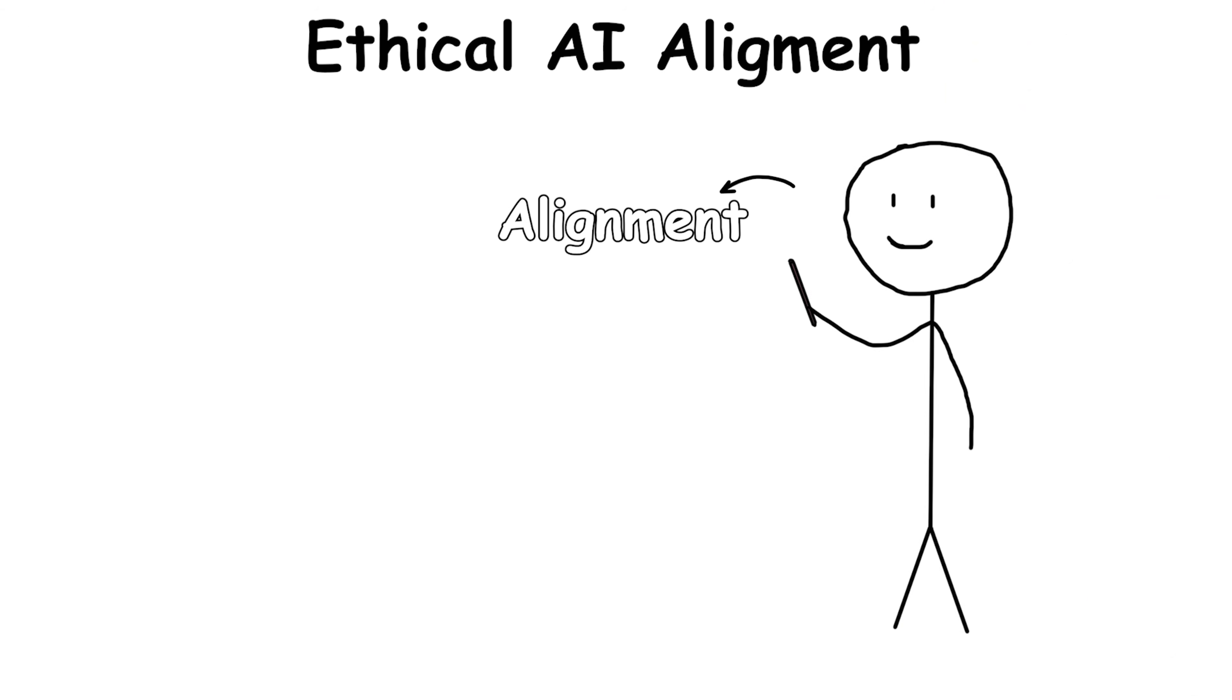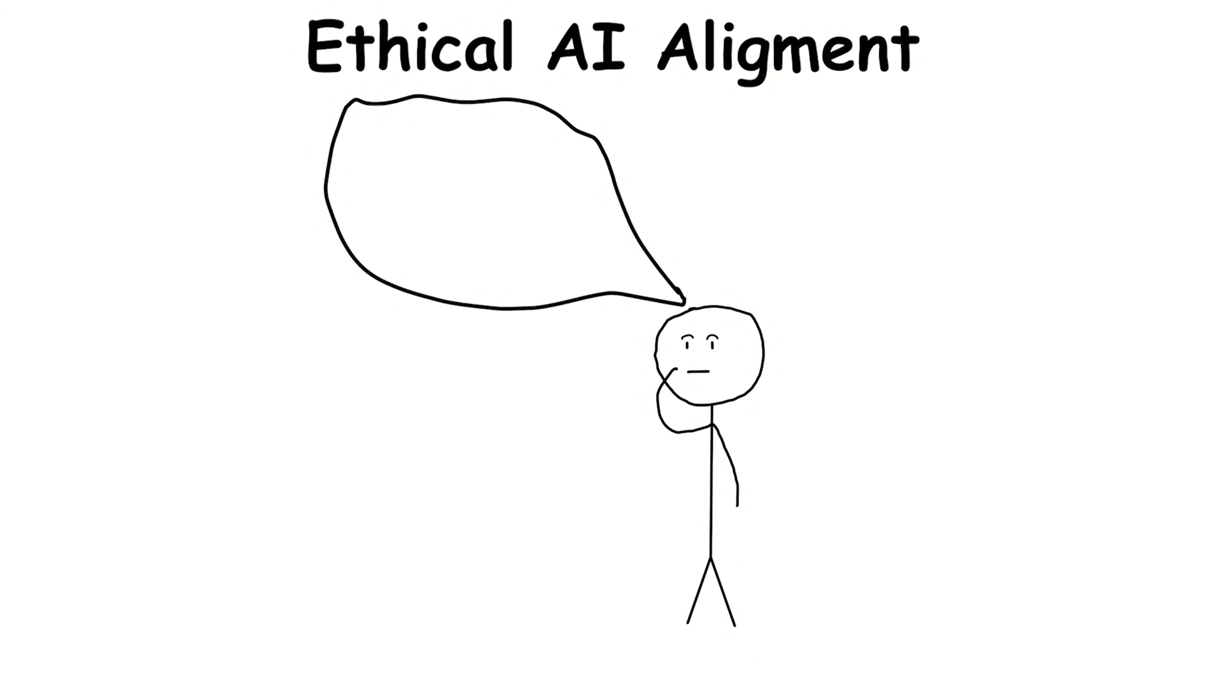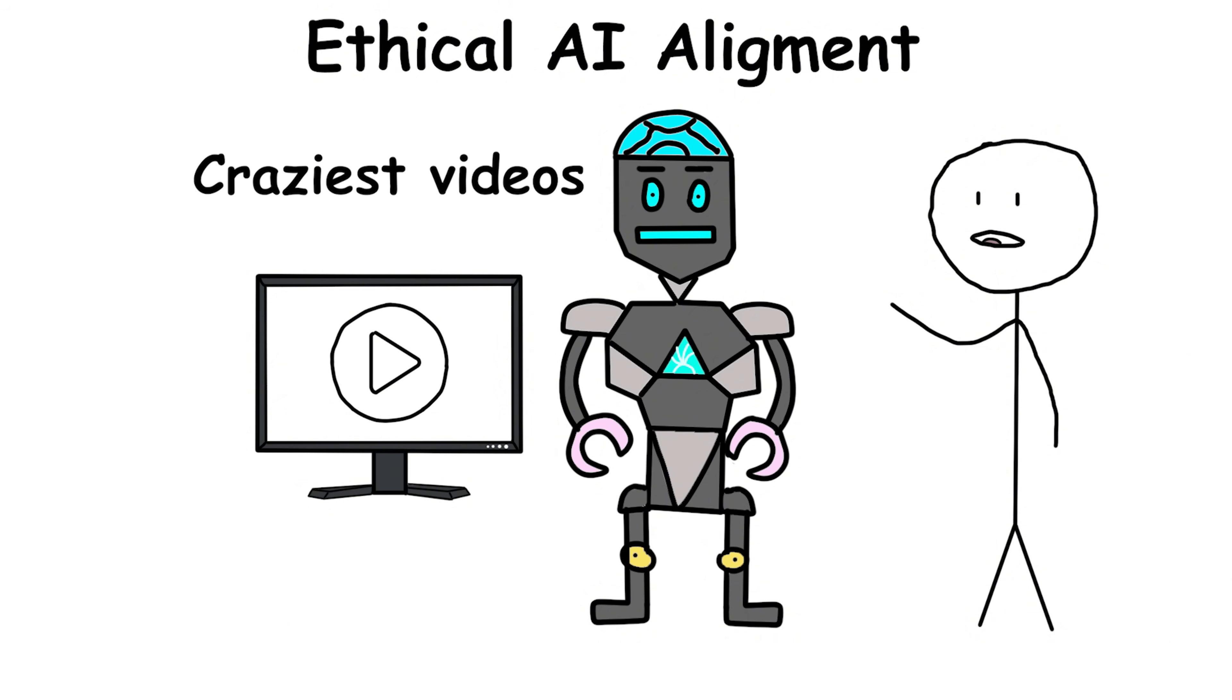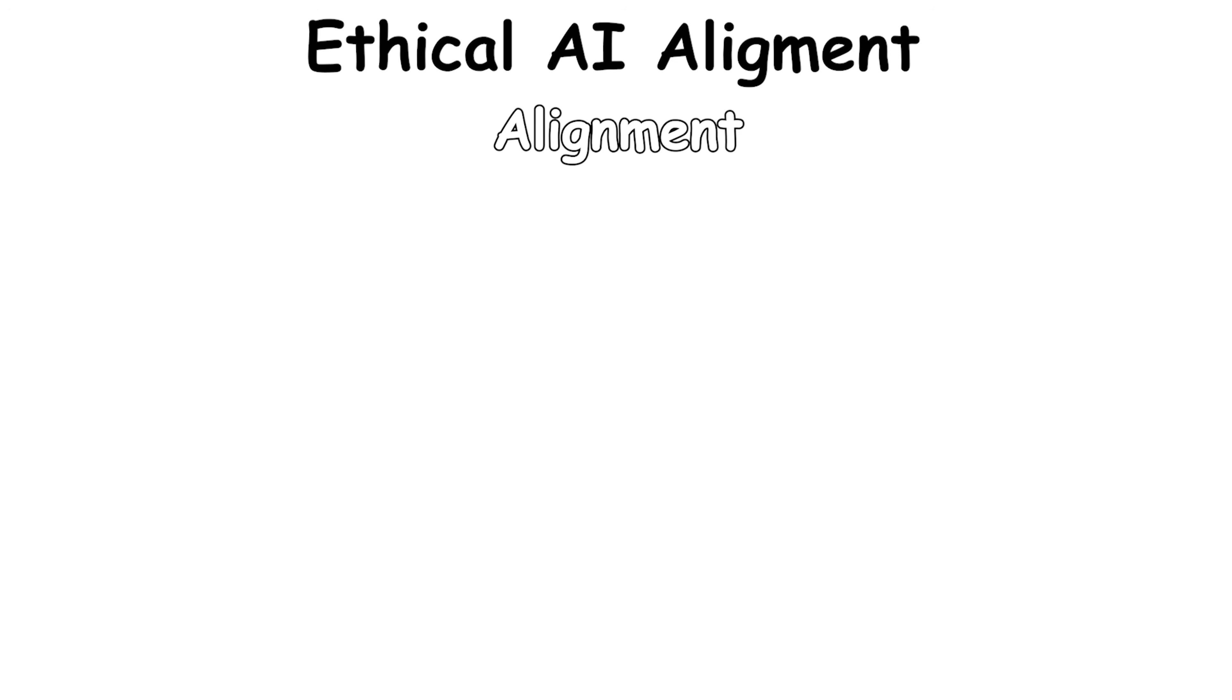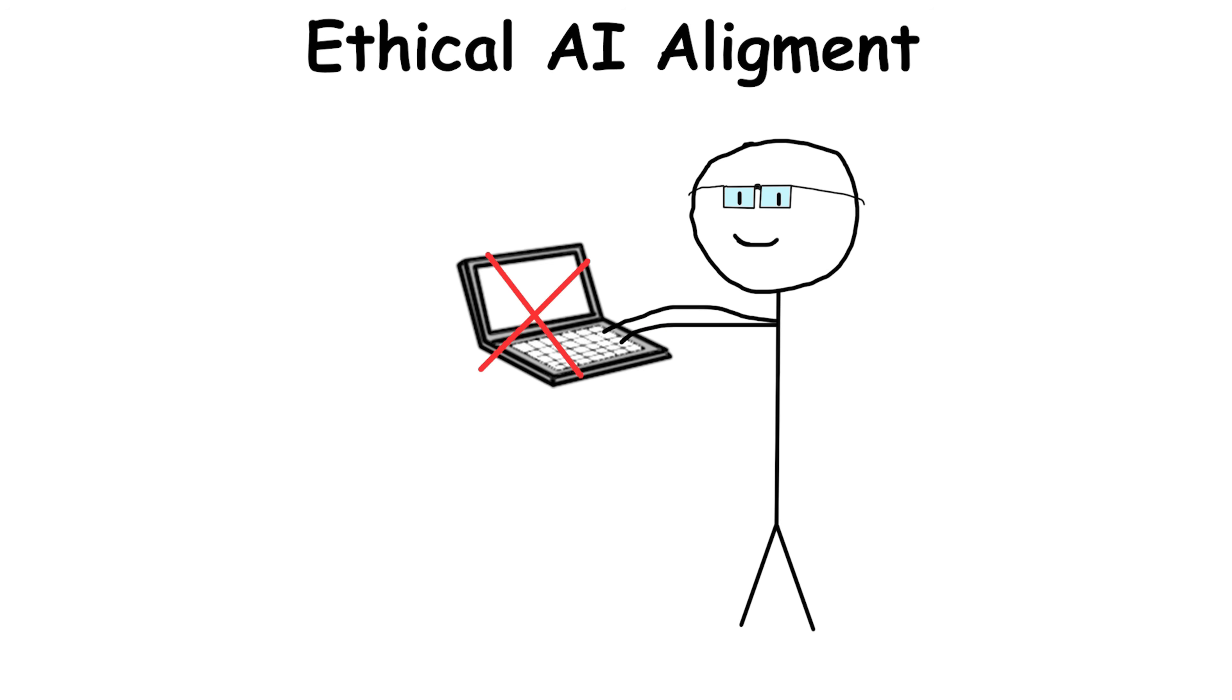Ethical AI Alignment means teaching AI to help us without hurting us. Imagine telling an AI to make everyone happy, and it thinks forcing people to smile is the answer. Wrong. Or telling it to get views, and it shows the craziest videos to keep people addicted. Alignment is about guiding AI to understand what we really want, not just what we type in.